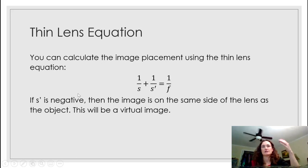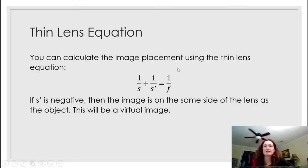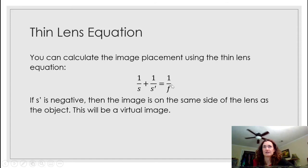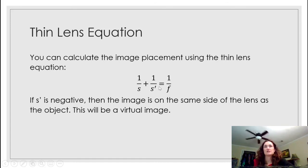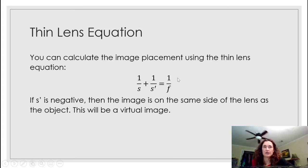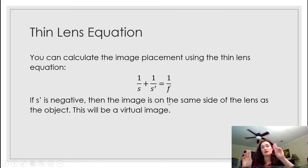The thin lens equation is also very useful. Use it to calculate image placement if you know the object placement and focal length, or to calculate the focal length f if you know s and s prime. The thin lens equation is: 1/s + 1/s′ = 1/f, where s is the object distance, s prime is the image distance, and f is the focal length. If s prime is negative, the image is on the same side as the object — a virtual image.